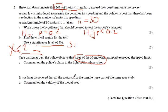It was later discovered that all the motorists in the sample were part of the same race club. Comment on the validity of the model used. Well, it does seem that being part of the same race club is going to potentially skew things. If they're all boy racers and they like to play with the speed limit a little bit and push the limits, then that might skew the data. And so the model may not be accurate if it's not a fair sample of the whole population that uses that motorway.